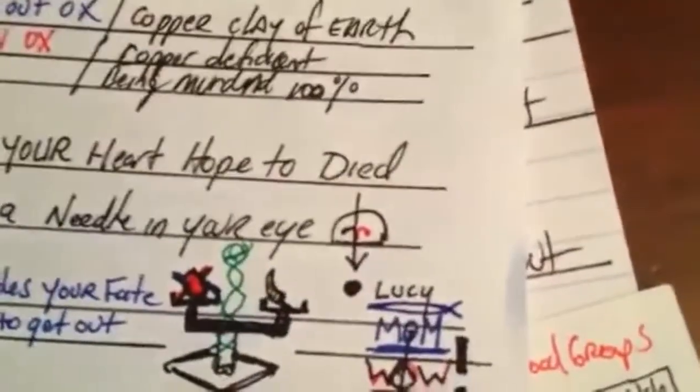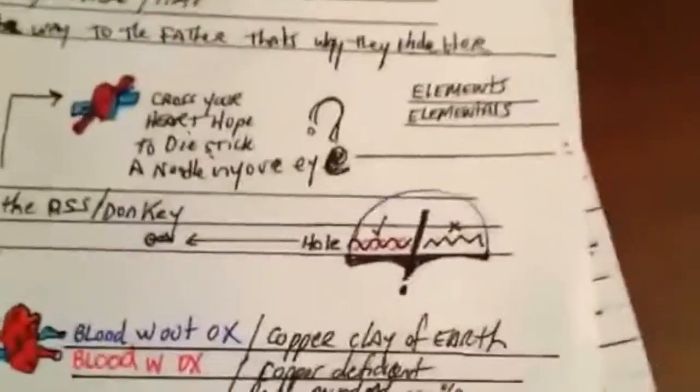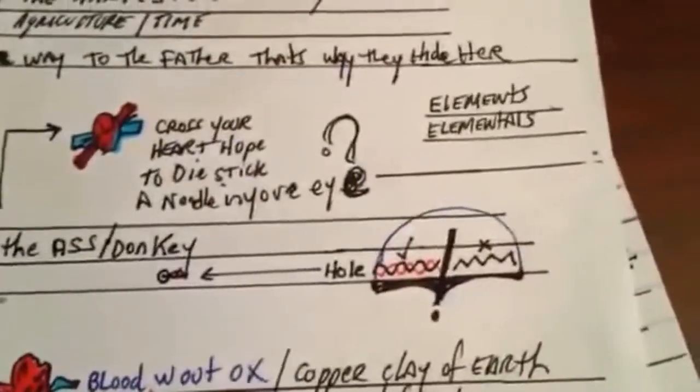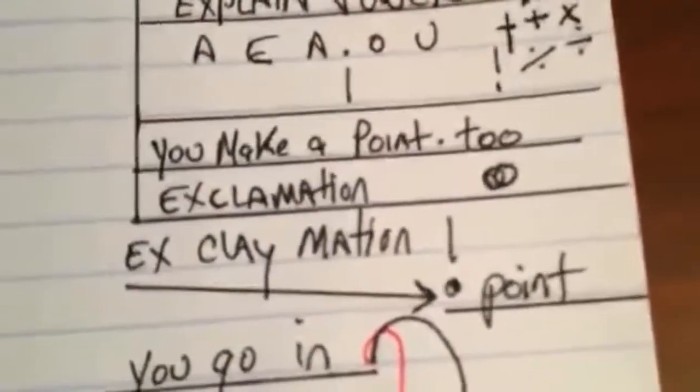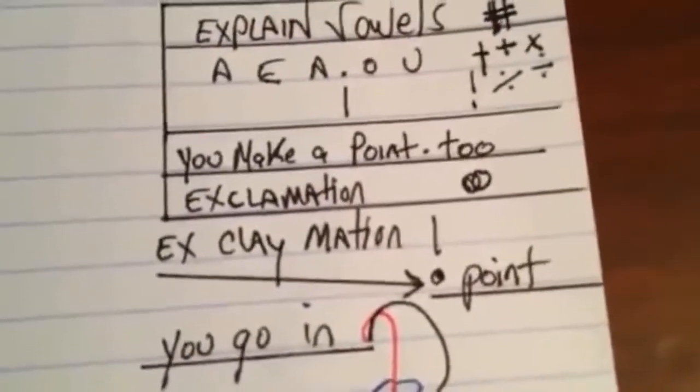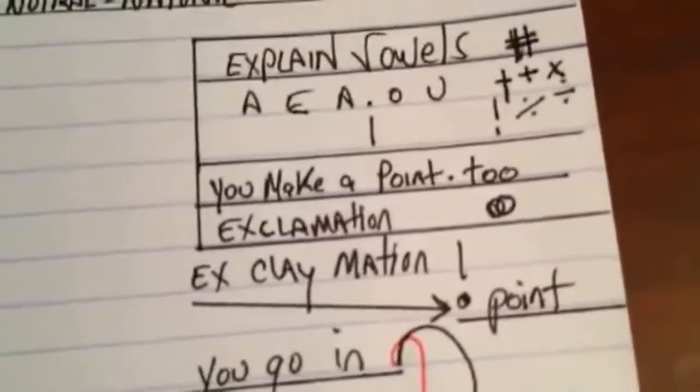I said in my previous video, this was the diagram I used. It's clear - cross my heart, hope that I stick a needle in my eye. That's the exclamation point. Exclamation, you see it right there - X clay nation, you're made out of clay.